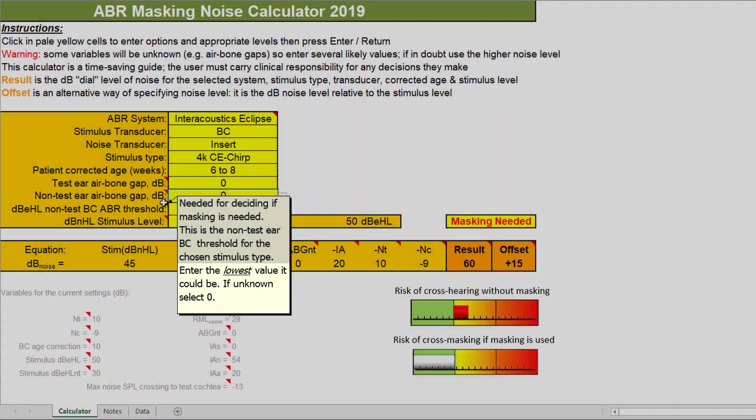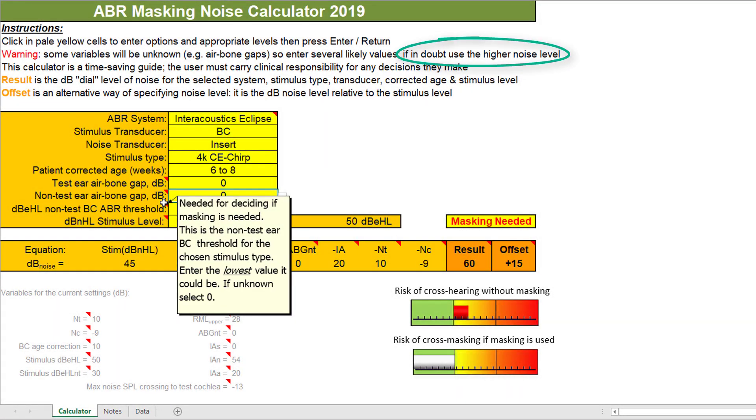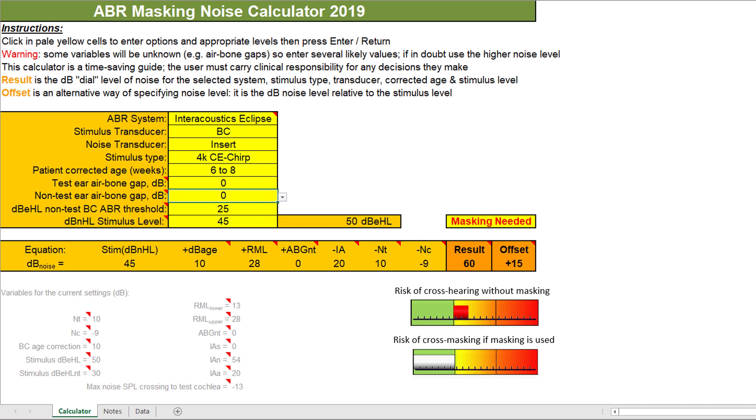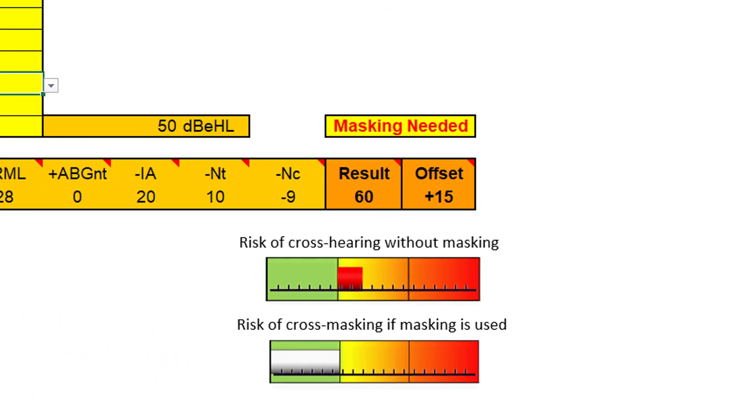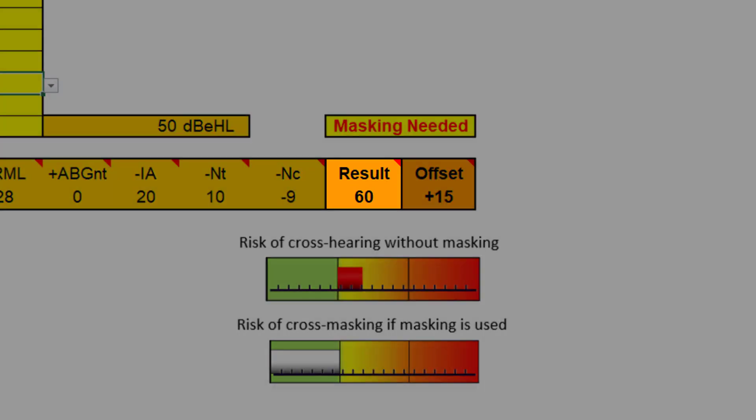This will ensure a greater amount of masking is applied in order that you can be confident that the non-test ear cochlea is being sufficiently masked and is not therefore contributing to the response. Once you have entered your values into the calculator, assess the risk of cross-masking and the likelihood of cross-hearing, the calculator will provide you with two results for each scenario that you explore, a result and an offset. The result is the dB dial level of masking noise that you should apply to your non-test ear and the value that you should enter into the Eclipse software.